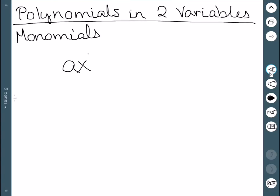These are of the form a x to the n, y to the m. So a is still our coefficient. It's the number in front. We usually know this already.